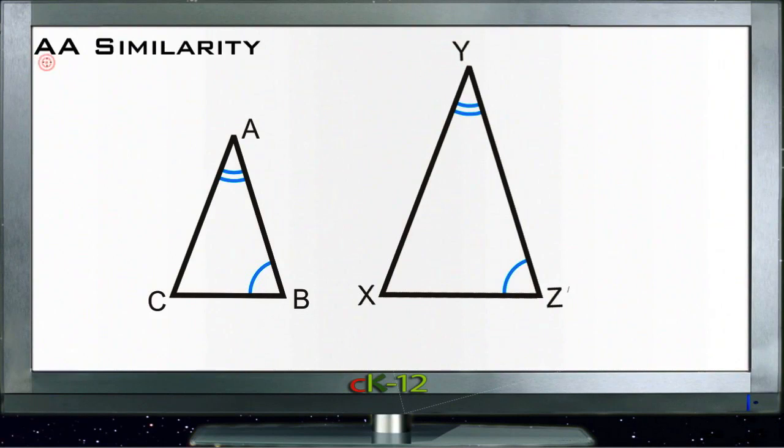Let's talk about AA similarity. AA is angle-angle, and it refers to triangles. What it says is that with triangles, you only need to know that two of the pairs of angles in two triangles are congruent.